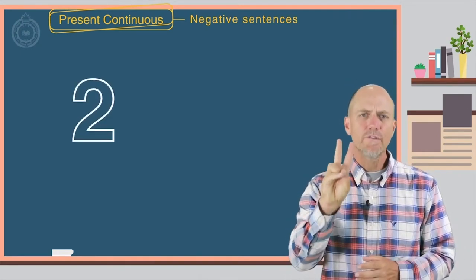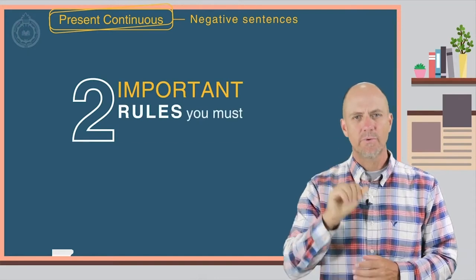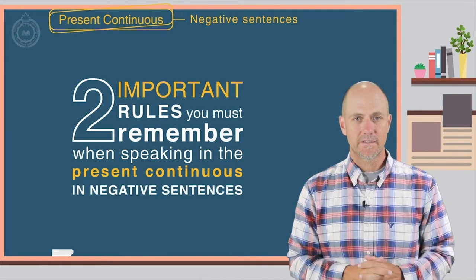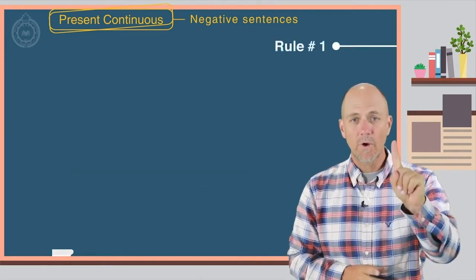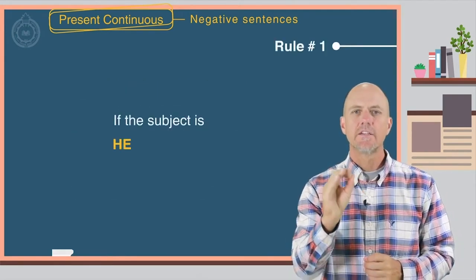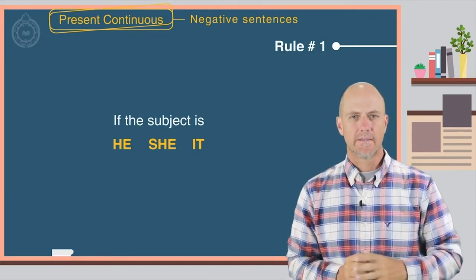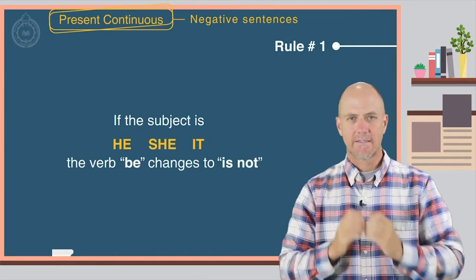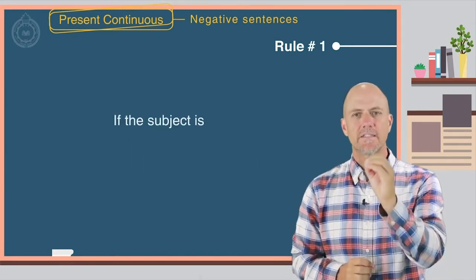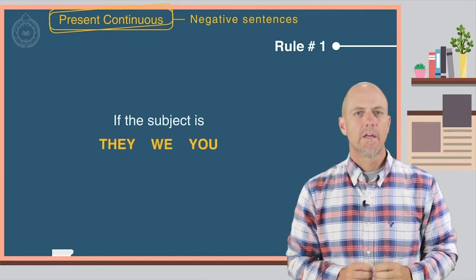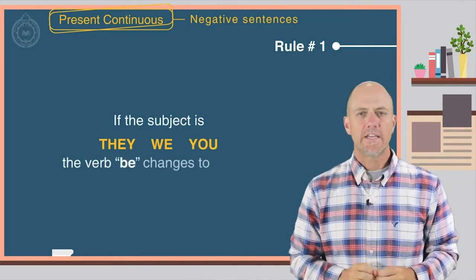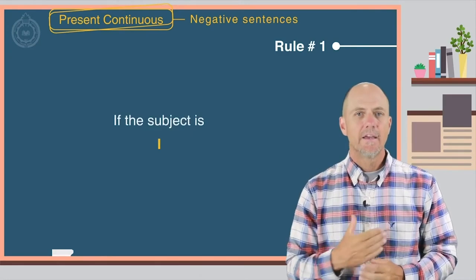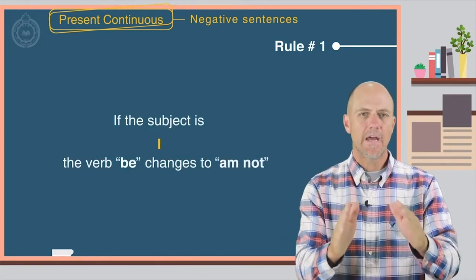There are two very important rules you must remember when speaking in the present continuous in negative sentences. Rule number one, if the subject is he, she, or it, the verb be changes to is not. If the subject is they, we, you, the verb be changes to are not. If the subject is I, the verb be changes to am not.